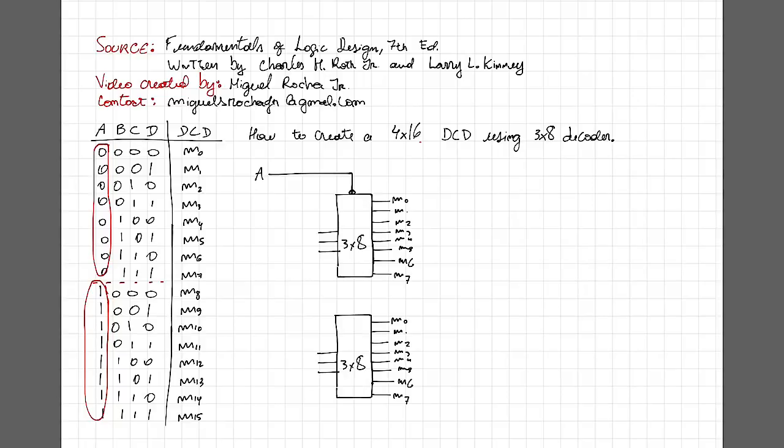So when A is equal to zero, this decoder is going to be active. And to connect to the other one, we are going to connect just straightforward—there is no bubble. Which means that when A is equal to one, the other decoder is going to be active, and the first one is going to be inactive.